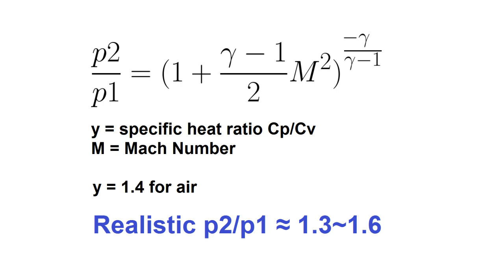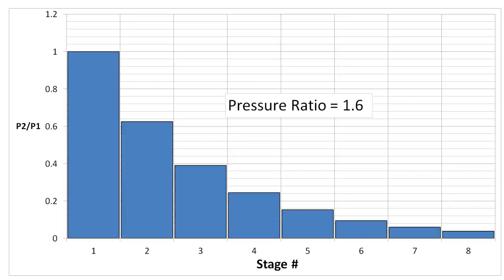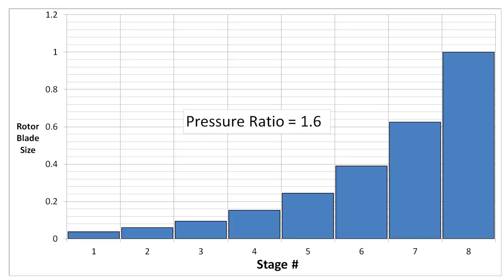That means for each stage you're dividing the pressure by let's say 1.6 just for example, so you'll get an exponential drop in pressure as you progress through the turbine, which will have a corresponding drop in density that the rotor blades will have to be bigger to compensate for.